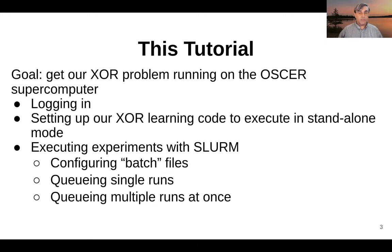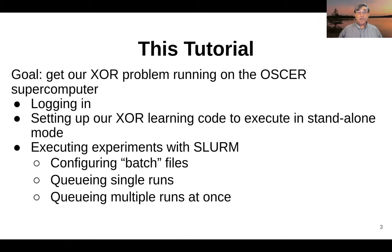And then we'll talk through the process of setting up and executing experiments with Slurm. This is all about queuing up experiments that will run on the compute nodes on the supercomputer. The heart of that are the batch files that talk about exactly what experiments will be executed. Then we'll give some examples of queuing up individual runs, and we'll finish up by setting things up so that we can queue up multiple runs of the same kind of experiment all at once.